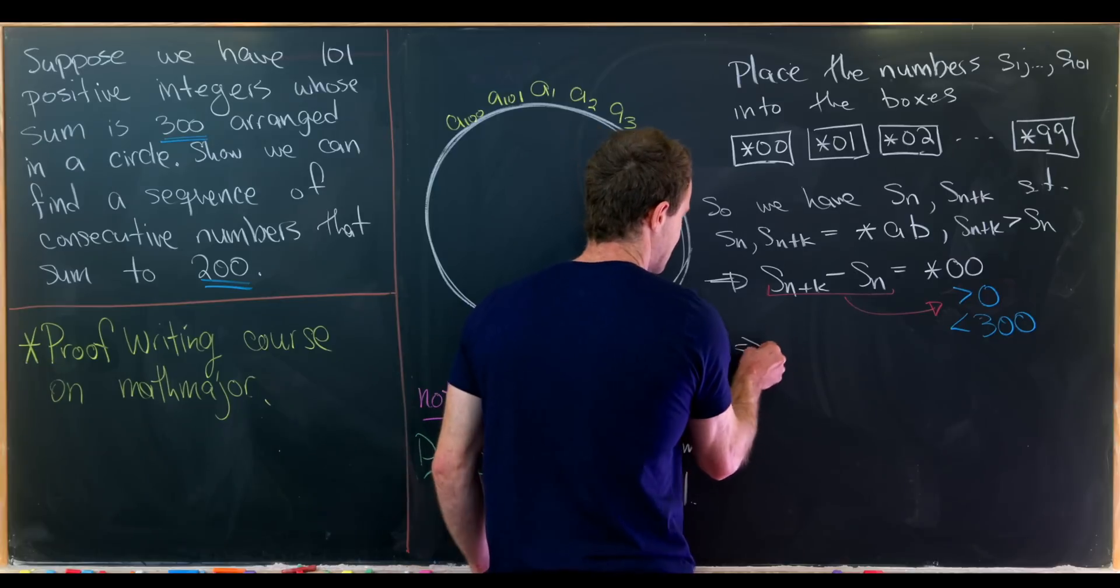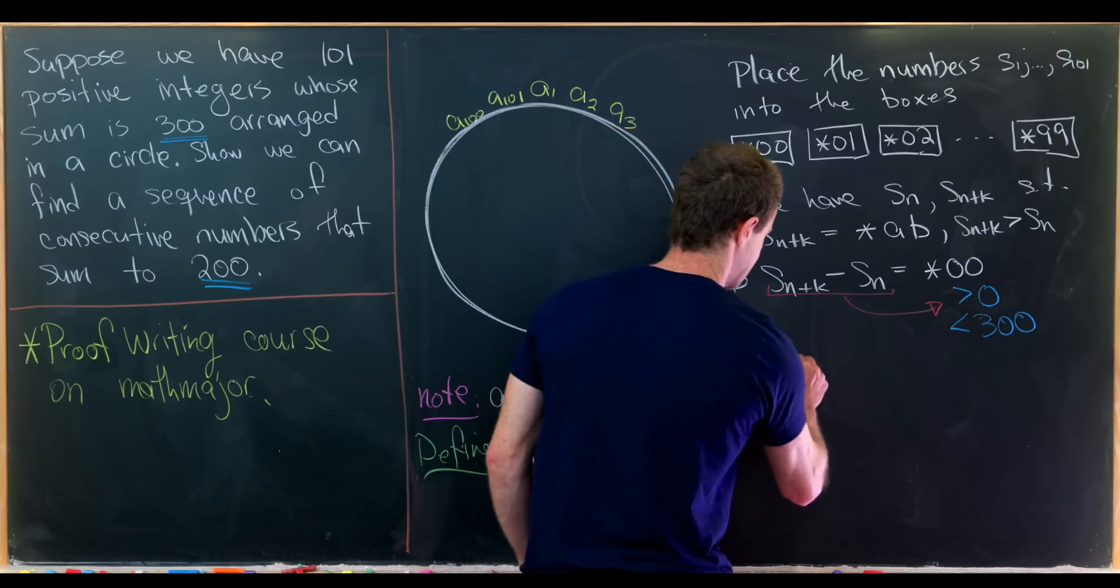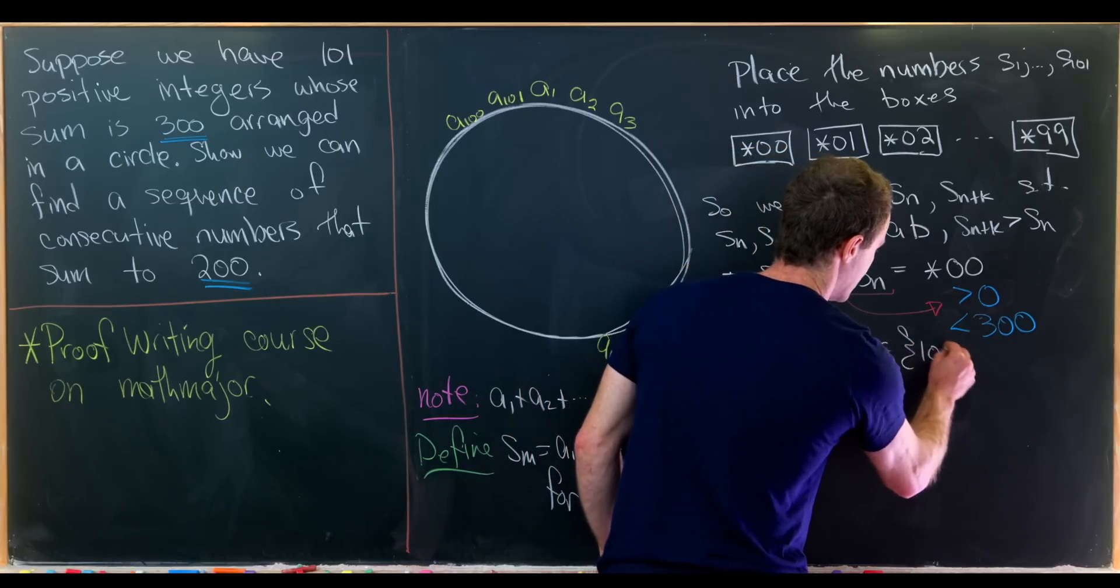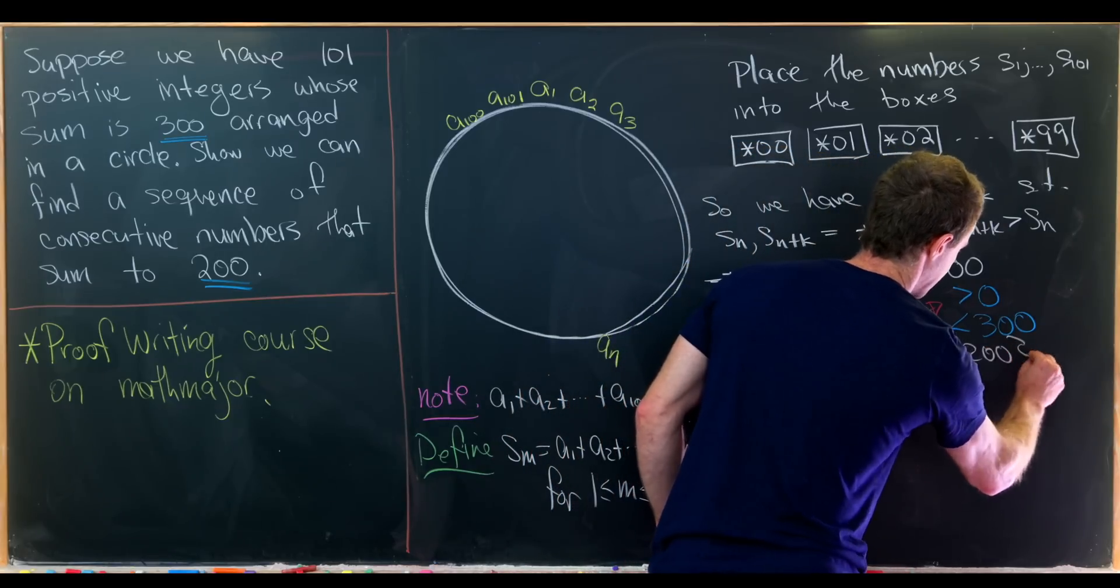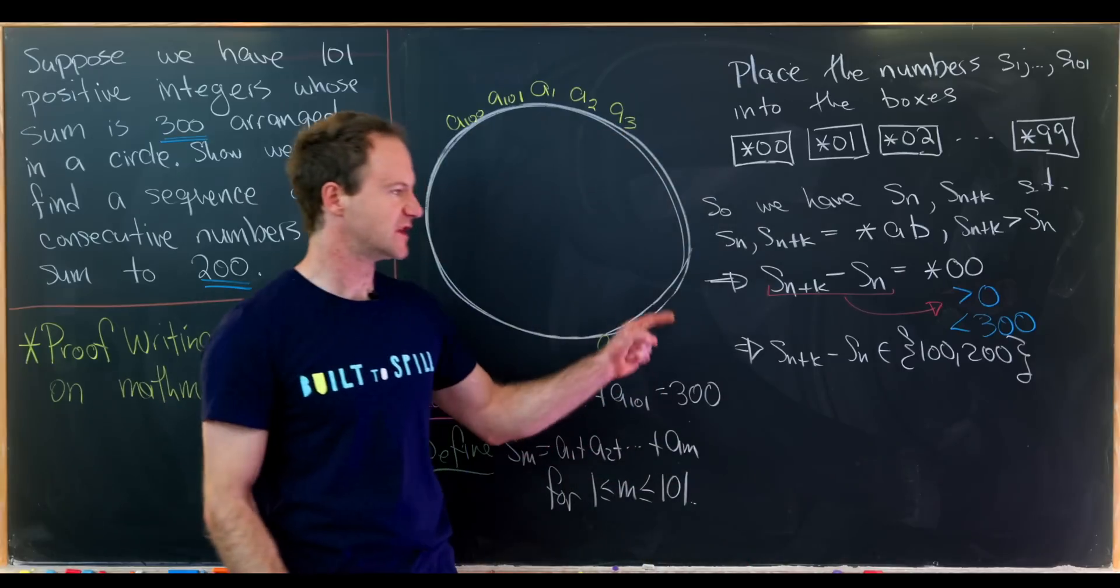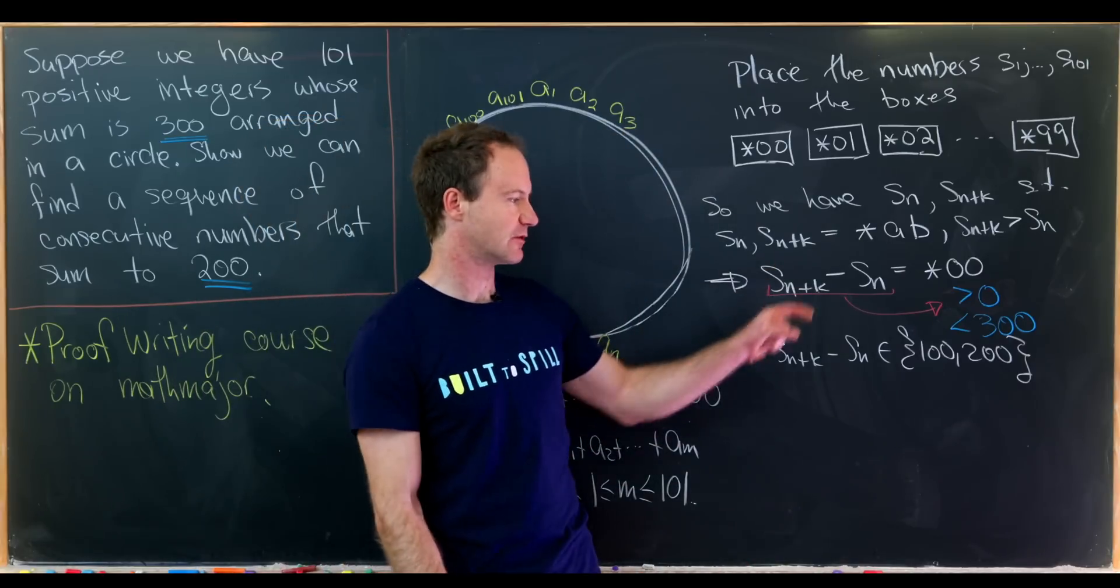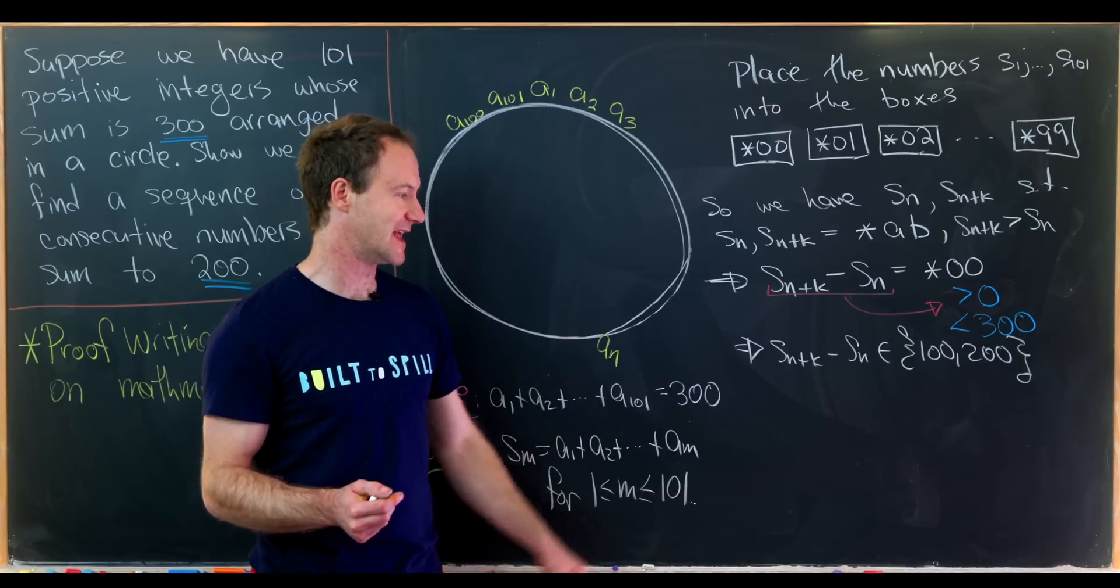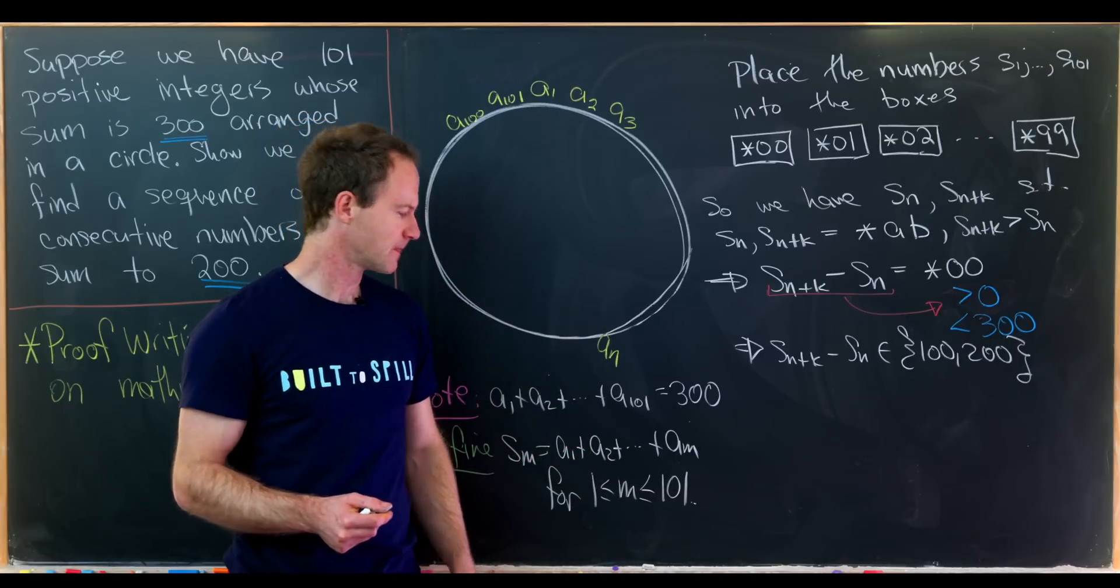But what does that tell us? That tells us that s sub n plus k minus s sub n can only be 100 or 200. Well, why is that? Well, those are the only two numbers between 0 and 300, not including 0 and not including 300, that end in two zeros.